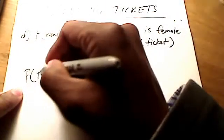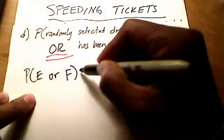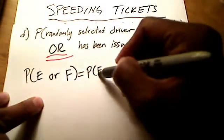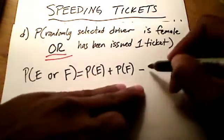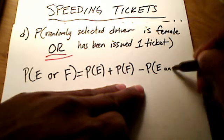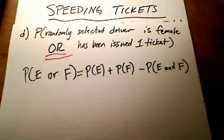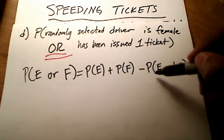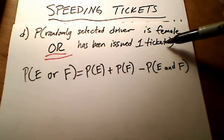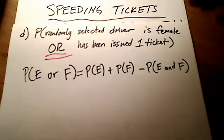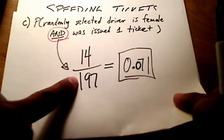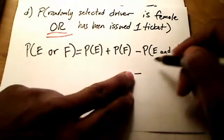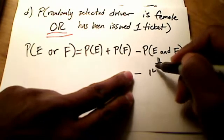The general addition rule looks like this: if you want to find the probability of two things that are being 'or'-ed, find the probability of the first one, add it to the probability of the second one, and take away where they overlap. Do we already know where E and F overlap? In our case, female and issued one ticket where they overlap? Actually we do - we just figured that out in the previous problem. It was 14 over 197.